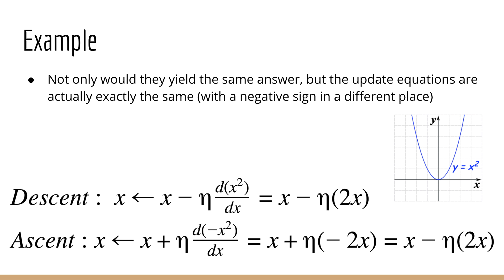To prove to yourself that this works, consider the function x squared, which has a minimum. Now, suppose I flip it around so I have negative x squared. You'll notice that the minimum of x squared and the maximum of negative x squared are at the same location, x equals 0. Whether you do gradient ascent or gradient descent, the update equations are exactly the same. Therefore, while they have different names and are conceptually different, mathematically you are using the exact same equation, just with the negative sign in a different place.